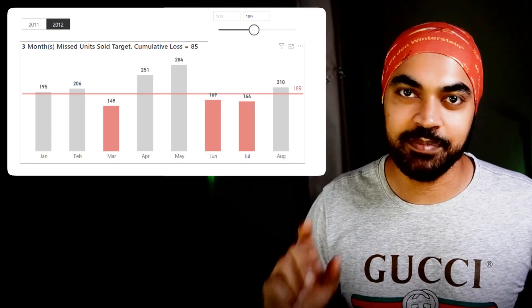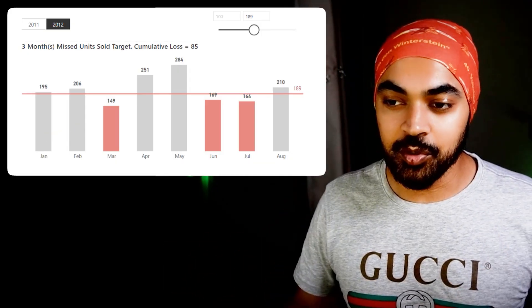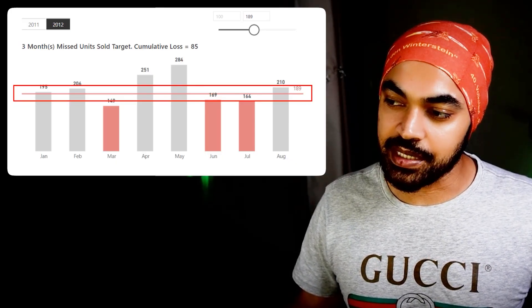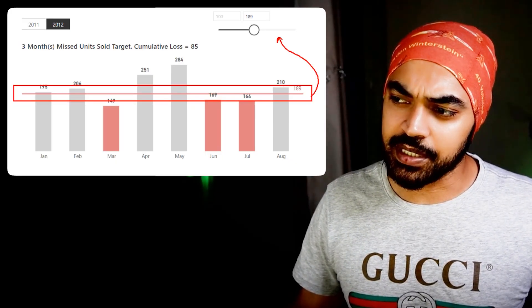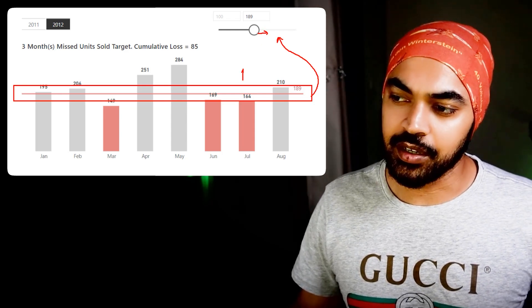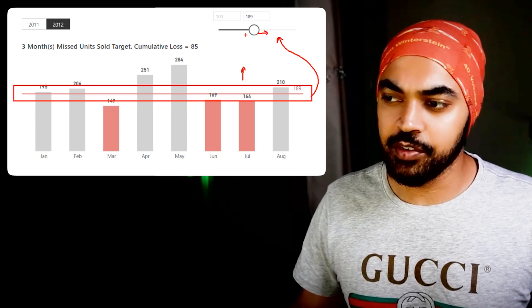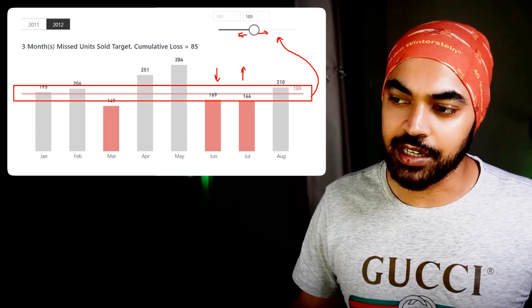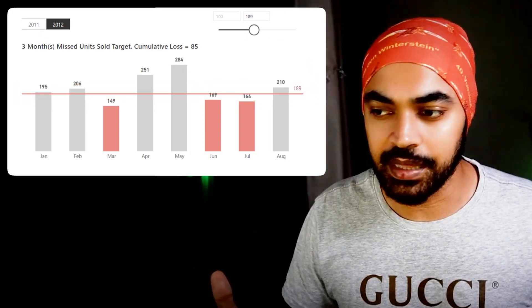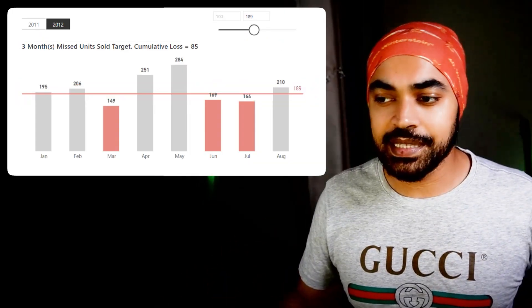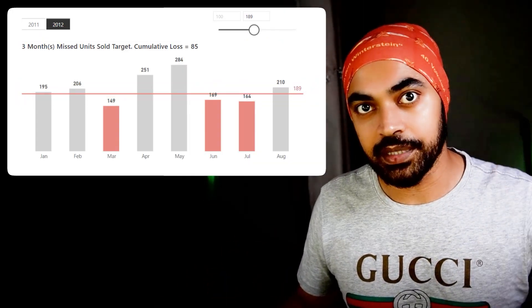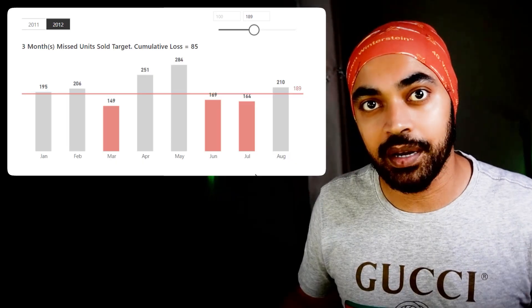Part one is the column chart itself. Part number two is this constant line that you can see, which is actually connected to this particular slicer. If you move the slicer towards the right the line goes up, and if you move it towards the left the line goes down. We need to learn how to make that. Part number three is the highlighting technique — as the line moves up the target rises and more bars get highlighted.